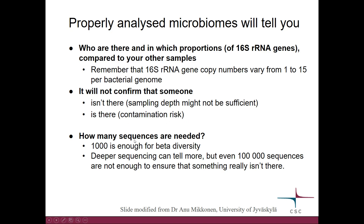How many sequences are needed? A thousand sequences per sample is considered enough for studying beta diversity. If you sequence more, that can tell you more, but even 100,000 sequences are not necessarily enough to ensure that something really isn't there.